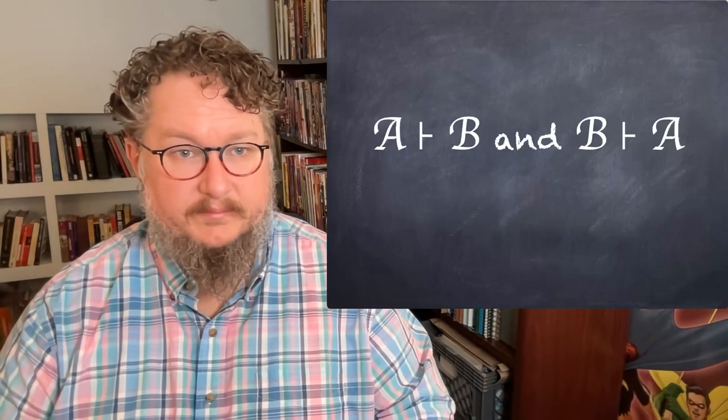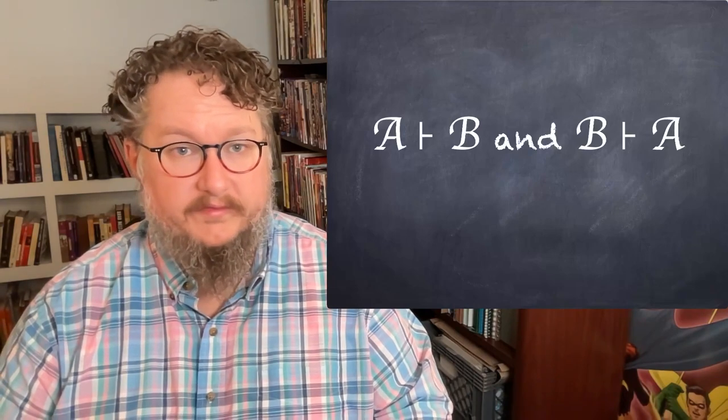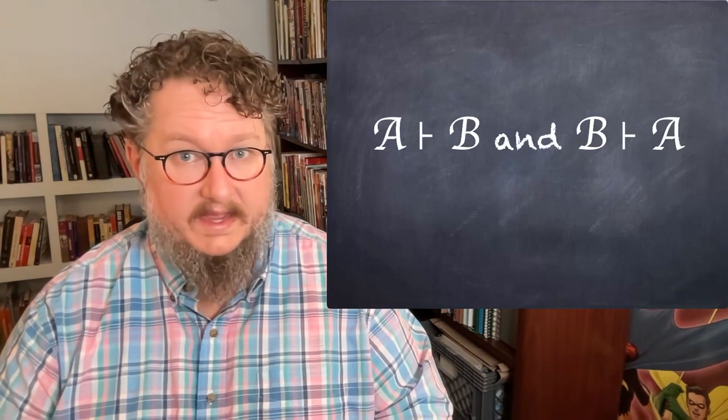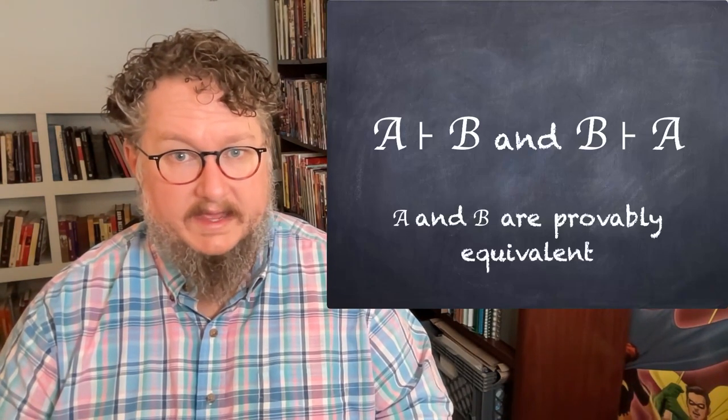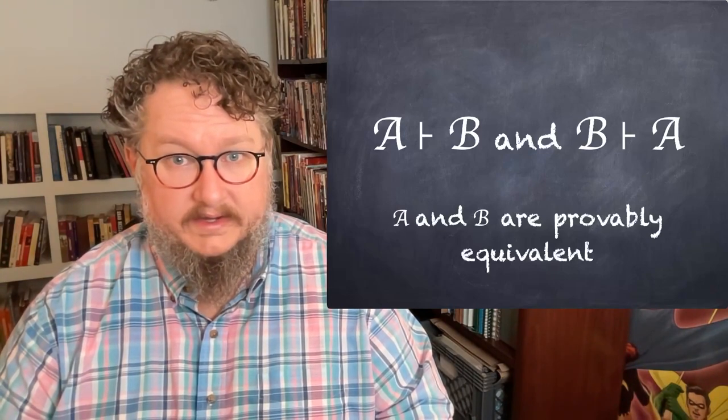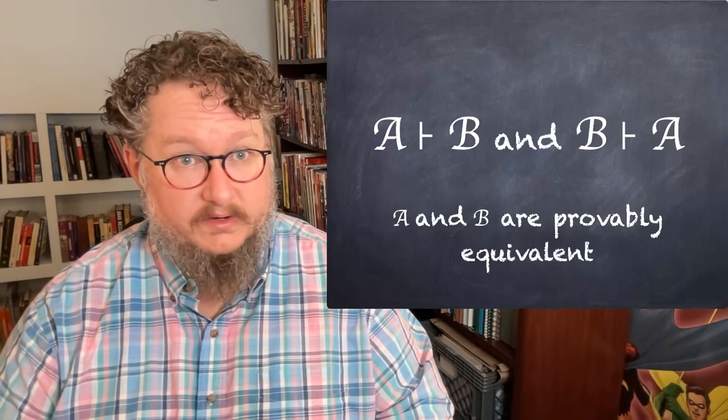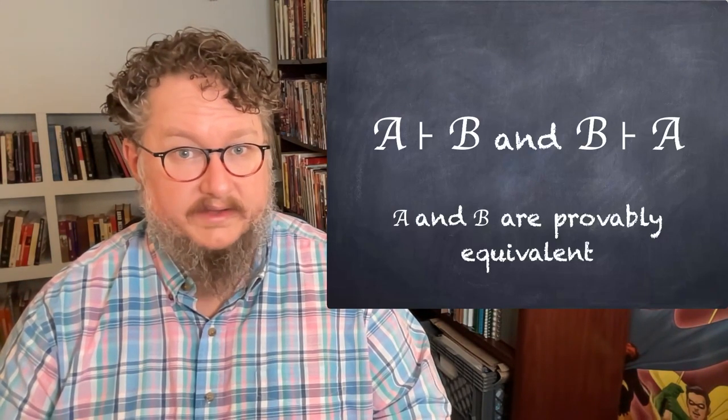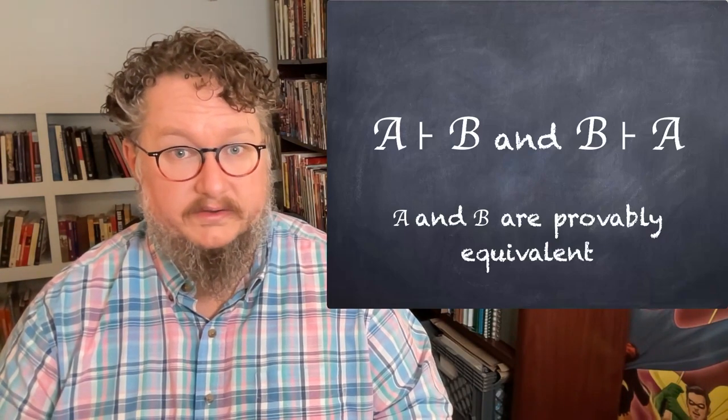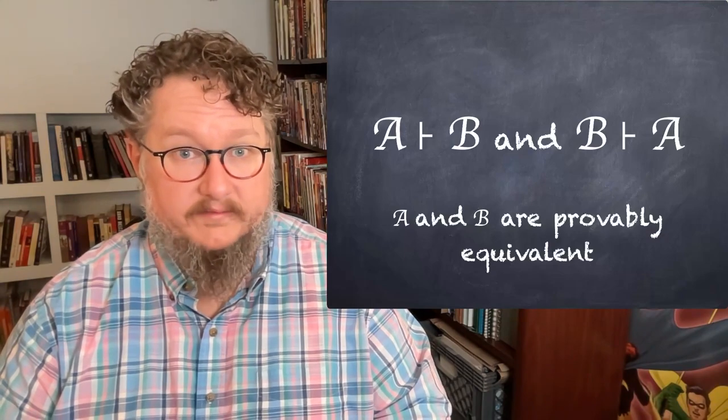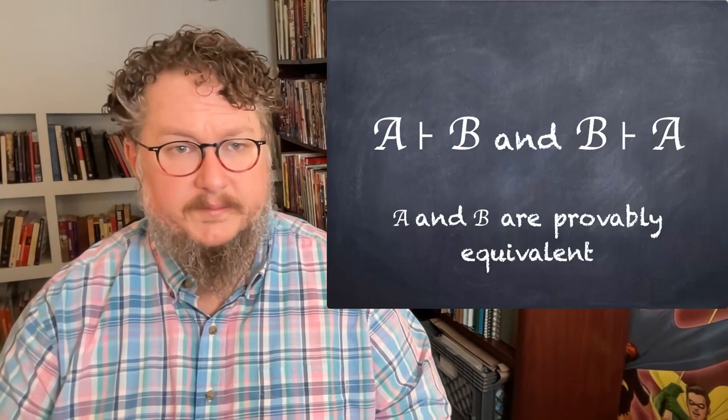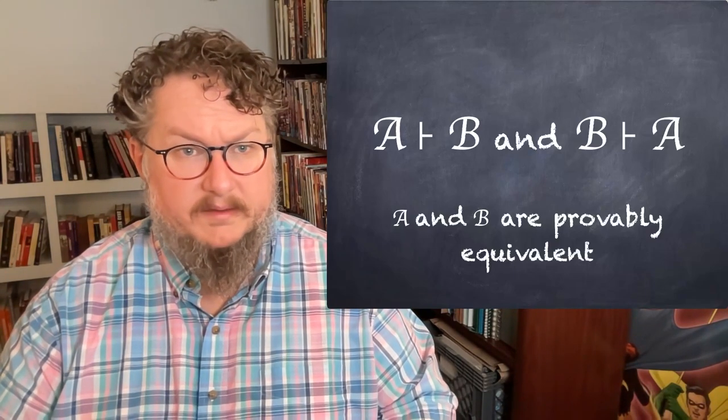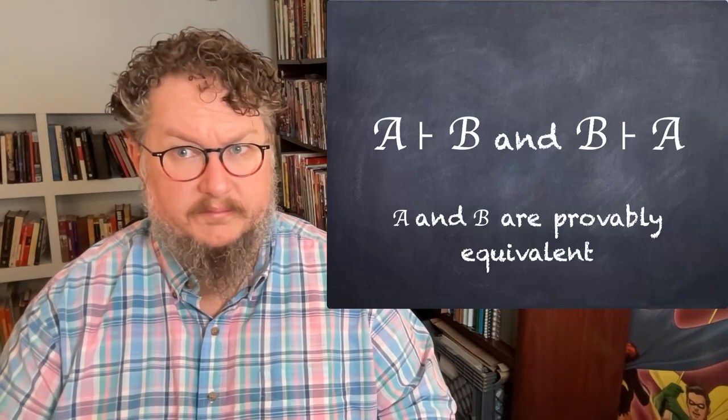Finally, if we have both, if we have a proof from A to B and a proof from B to A, if we can derive B from A and we can derive A from B, we say that A and B are provably equivalent. This is like logically equivalent that we saw before, but instead of using truth tables, instead of using a semantic style to show that they're equivalent, here we use proofs that we can derive them from each other. That means they're equivalent. So those are some of the proof theoretic concepts that I want you to know that help us think about what we're doing when we're doing some proofs.